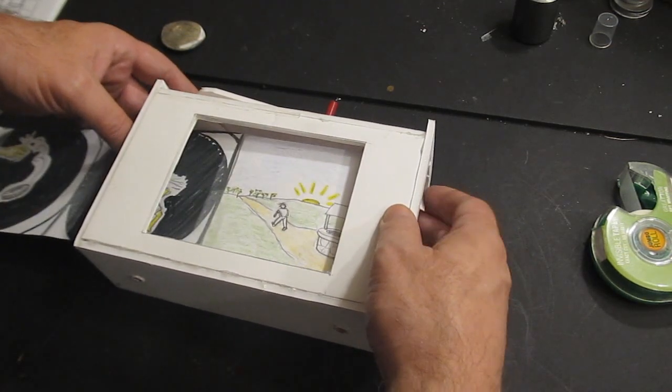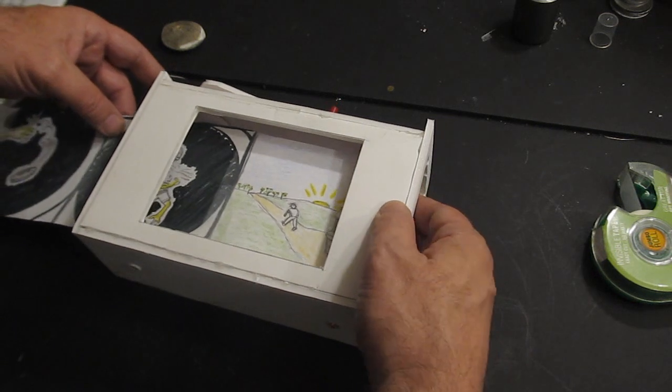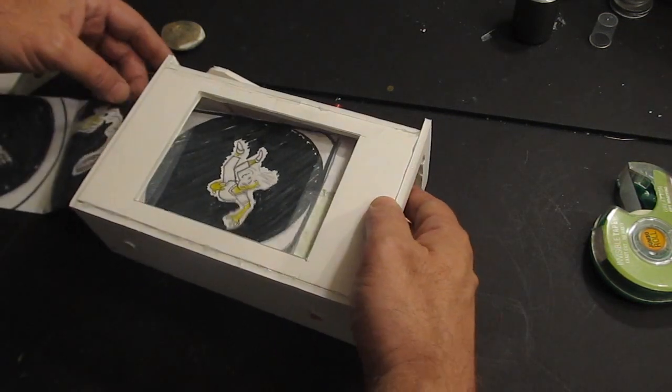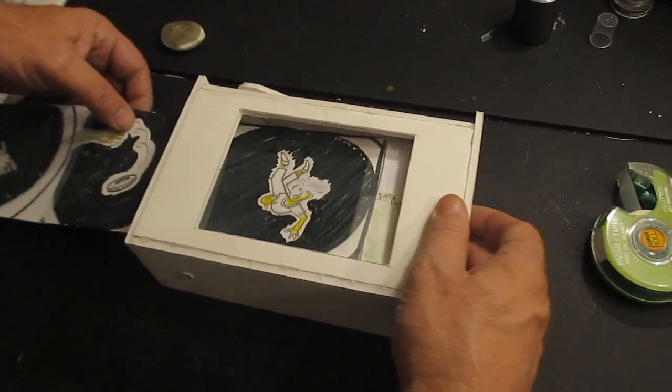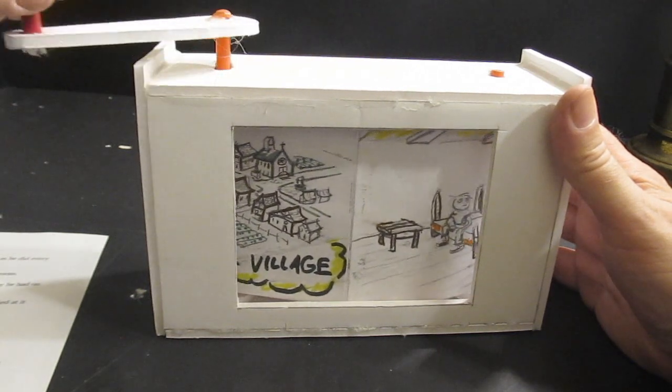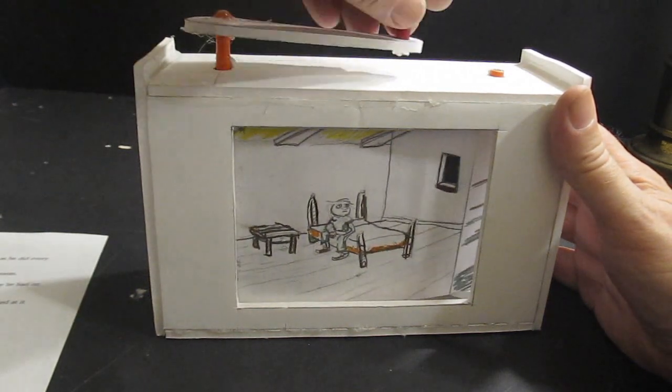So take that scroll. Once it's all done, all the scenes are in, in my case 10, tape it onto the right hand roller and roll it up. And then once it's all rolled up, tape it onto the left hand roller, and then you can go ahead and spin it and tell your story.